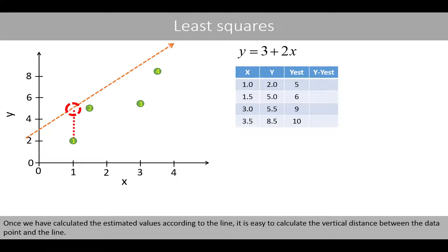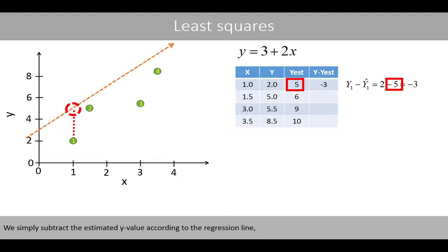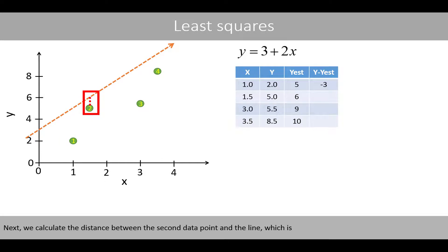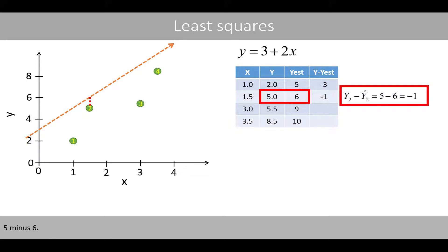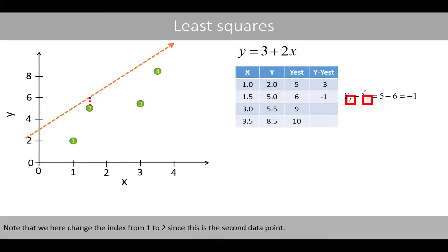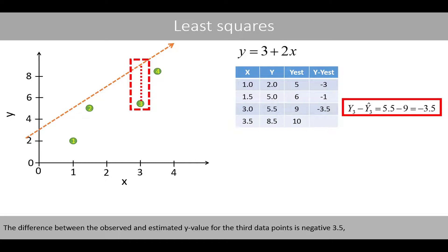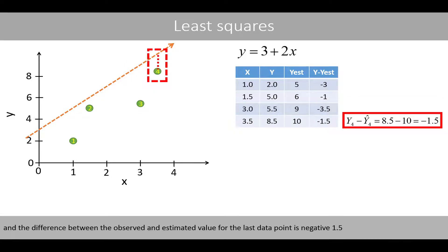Once we have estimated the values according to the line, it is easy to calculate the vertical distance between the data point and the line. We simply subtract the estimated y value according to the regression line from the y value of the data point, which is equal to negative 3. Note that we use the letter y for the y value of the observed data, and y-hat for the estimated y value according to the line. The difference between the observed and estimated y value for the third data point is negative 3.5, and for the last data point is negative 1.5.